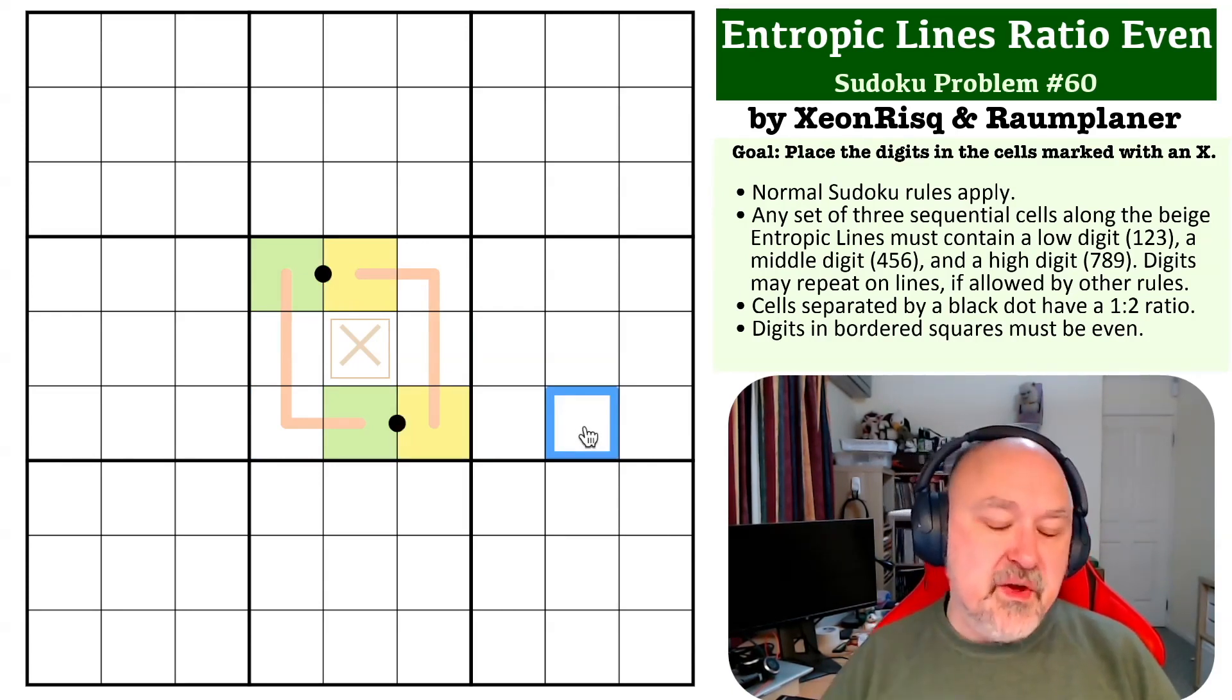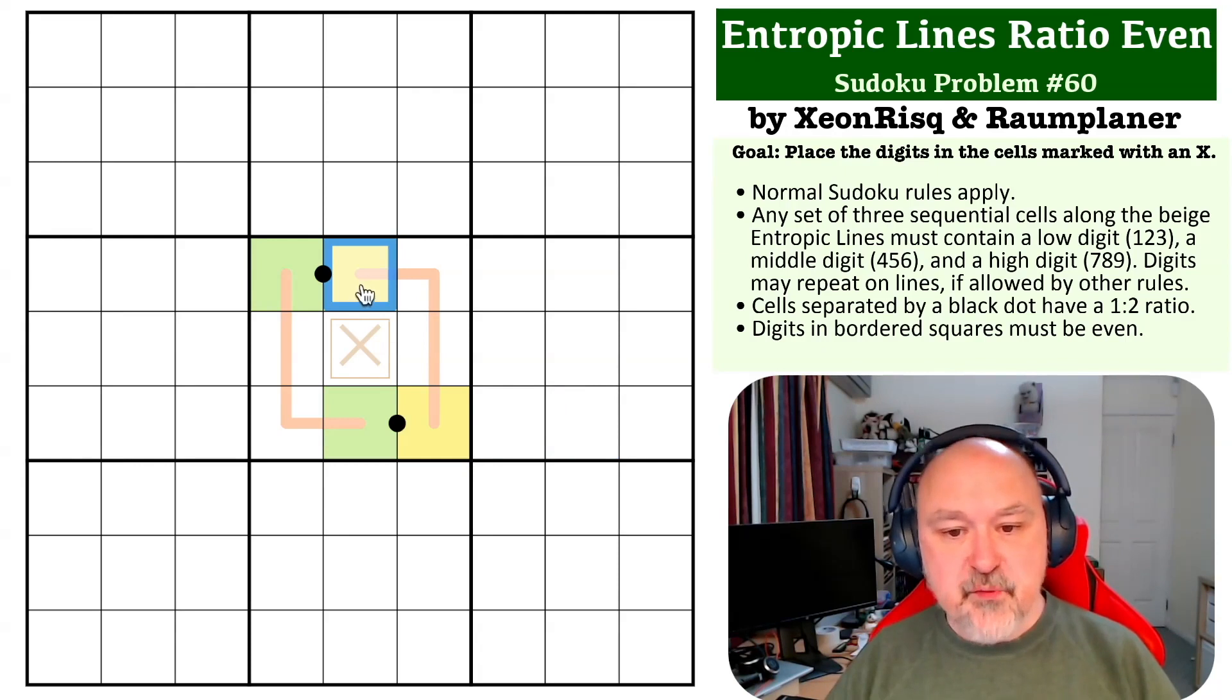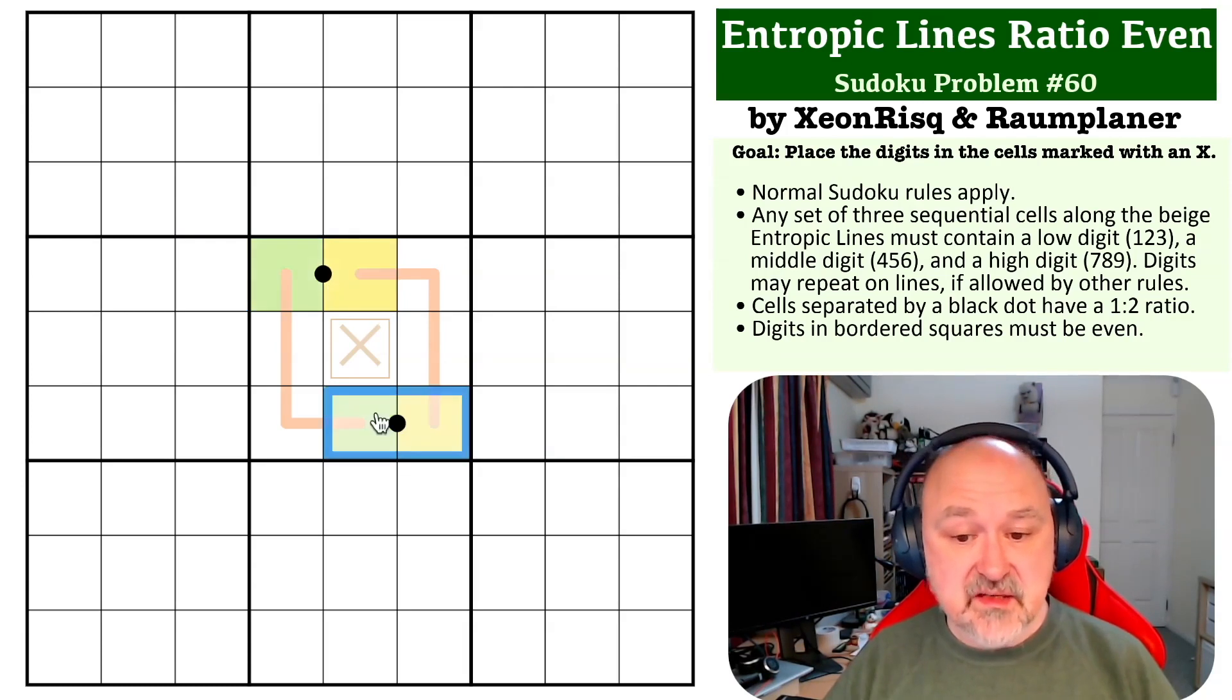Now, because these need to be all the same, we can't put a high digit into any of these cells. Because if we put a, say, the only high digit you can put onto a ratio dot, a black ratio dot, is an eight. And we can't put the eight with anything else. If we put an eight here, this would have to be a seven or nine, and we would break the other dot.